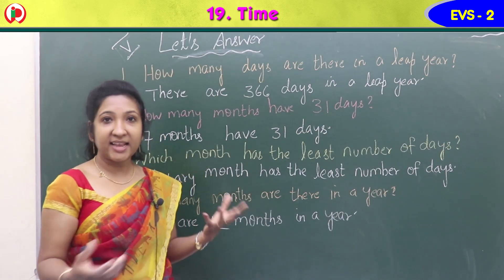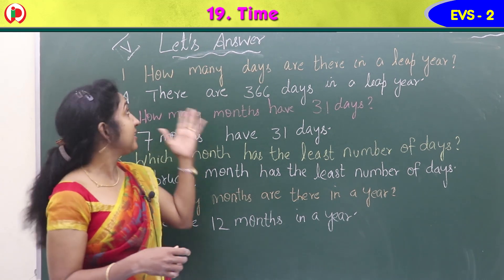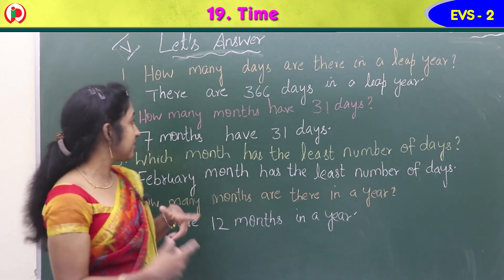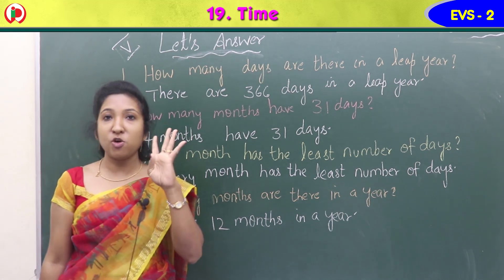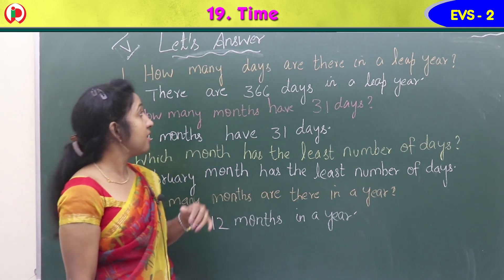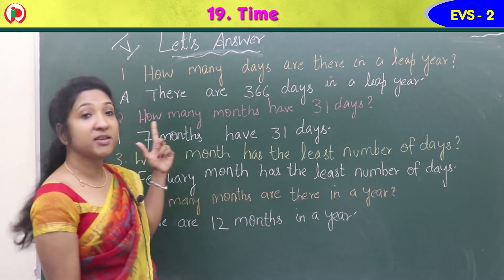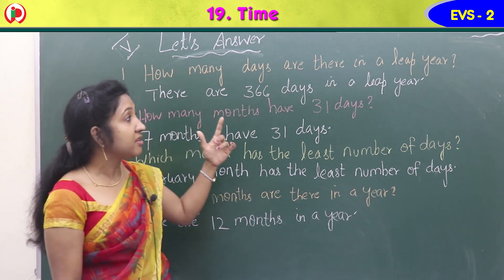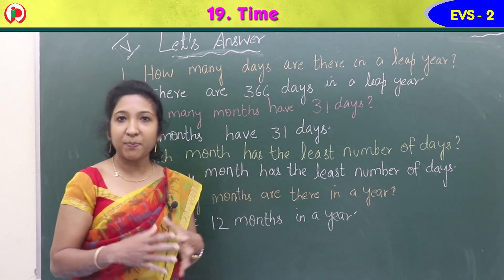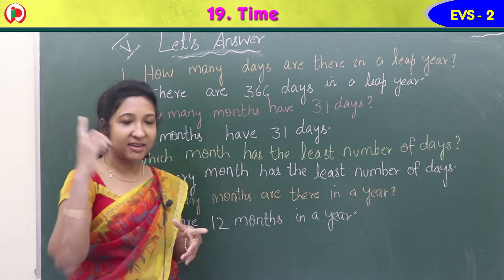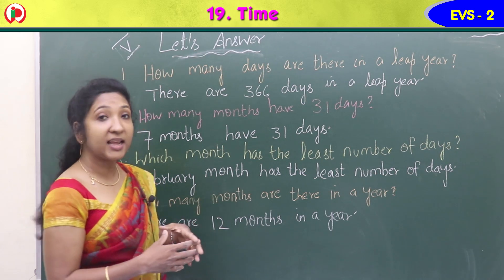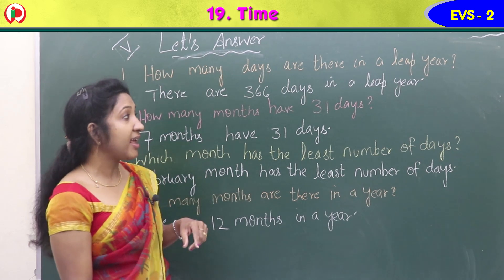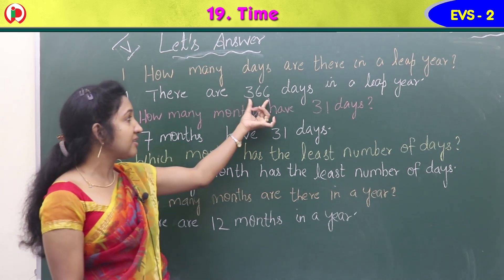The next exercise is exercise 5: let's answer. There are four questions. First question: how many days are there in a leap year? In a leap year we have one extra day, so the answer is there are 366 days in a leap year.